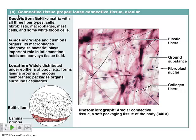Areolar connective tissue also helps surround different capillaries. When we talk about the circulatory system, capillaries are where exchange happens — they're lined by just one layer of cells, very thin. So we have this areolar tissue to help hold everybody in place so that exchange can take place.